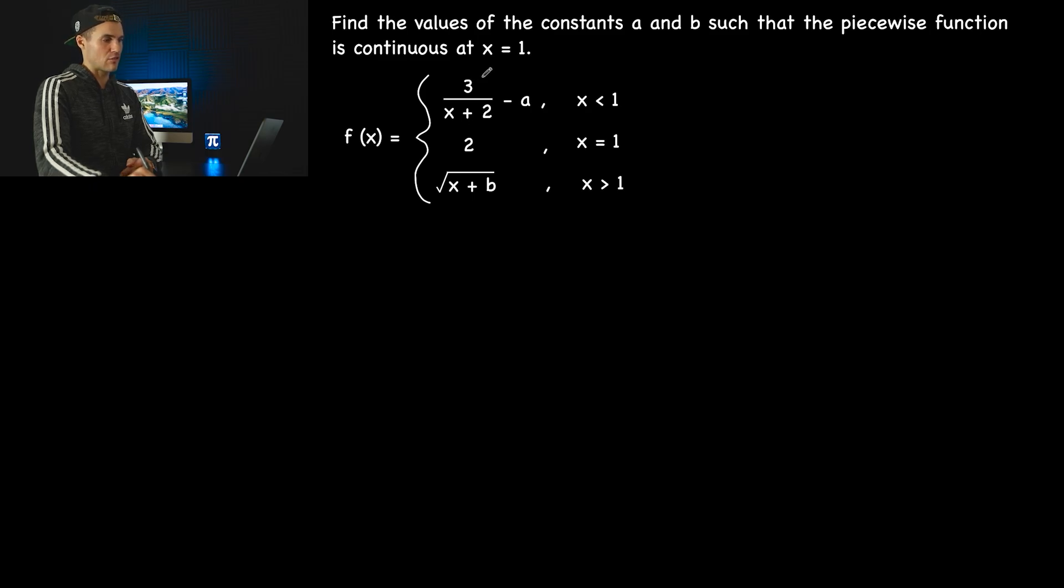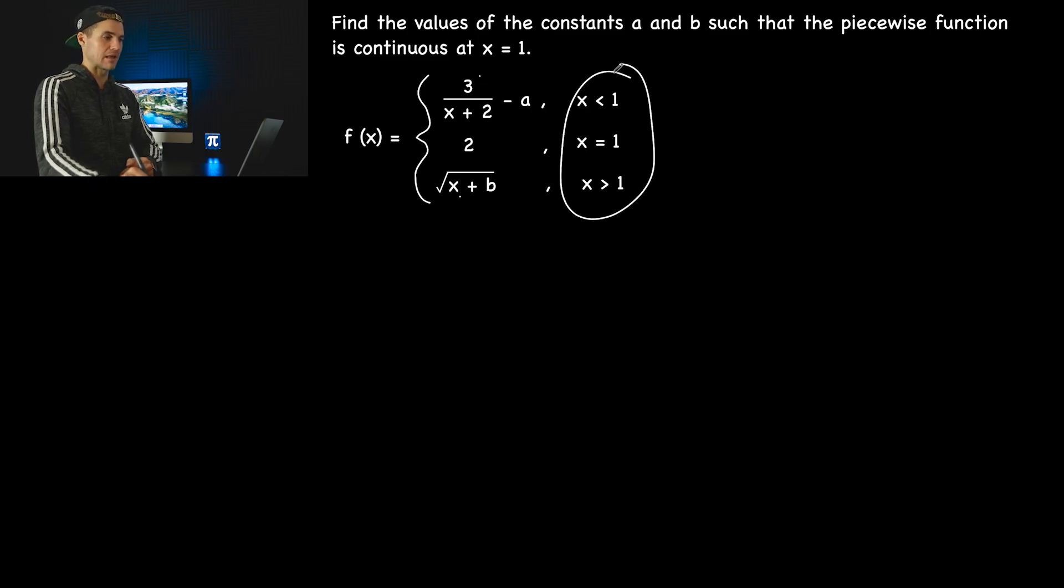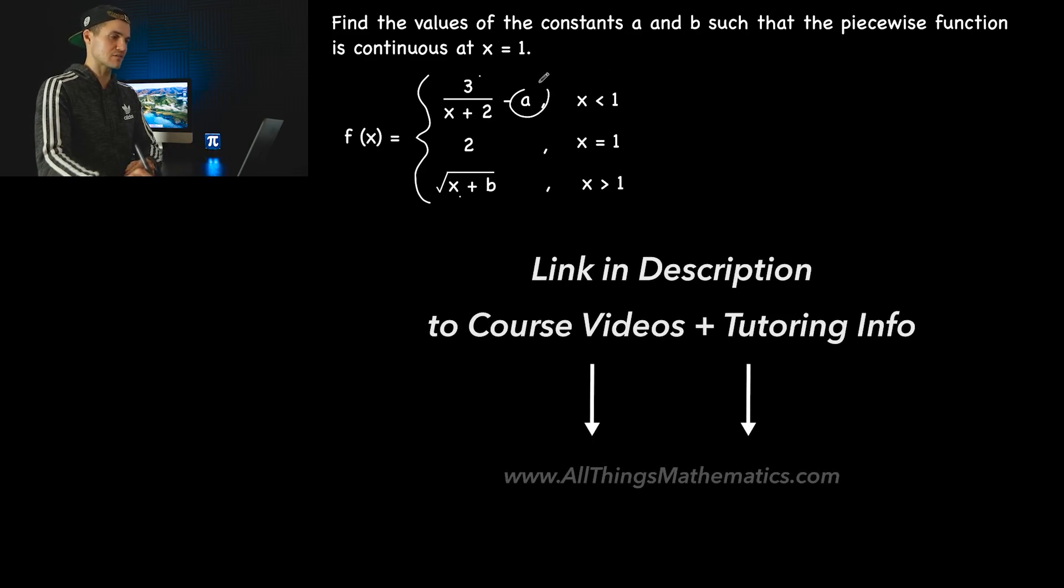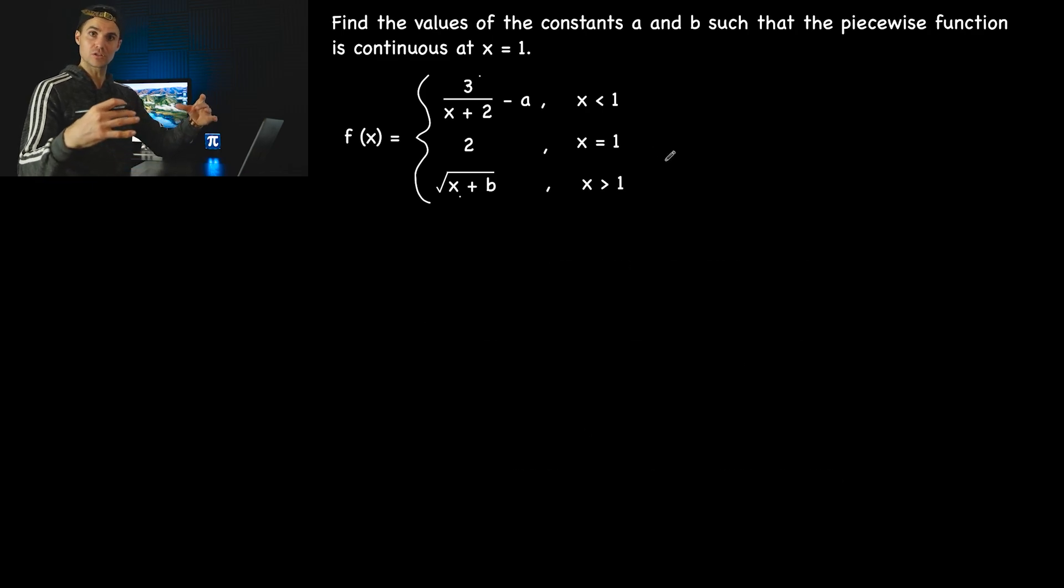Notice that these three functions meet at x equals 1. We want to know what values of a and b will make the entire piecewise function continuous at that meeting point.